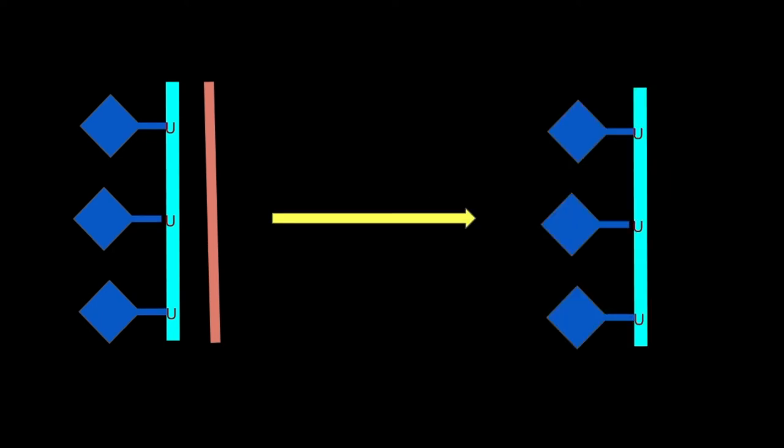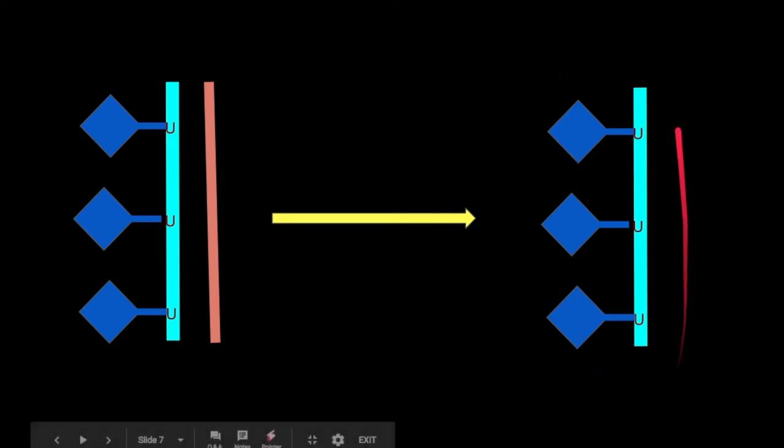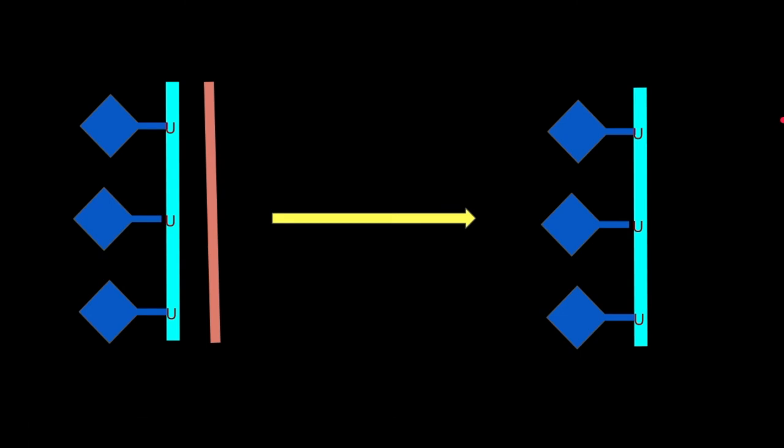Next, we denature the probe from the complementary strand. We do this because we need the biotin-labeled strand to attach to the sequence we are probing for.